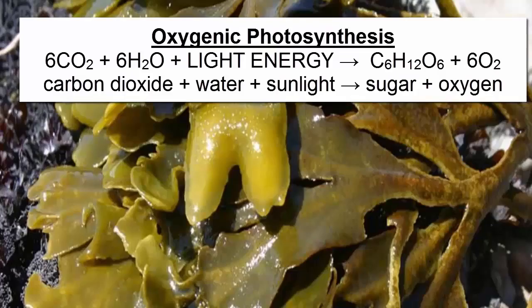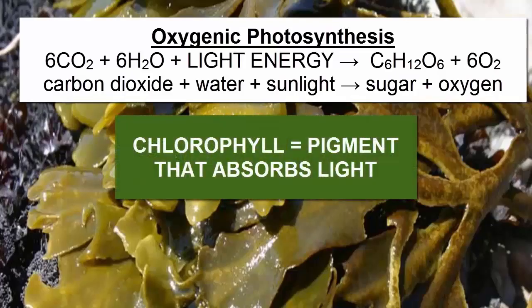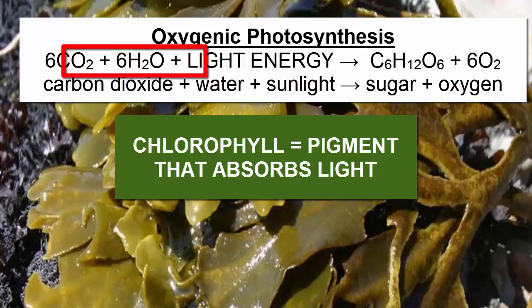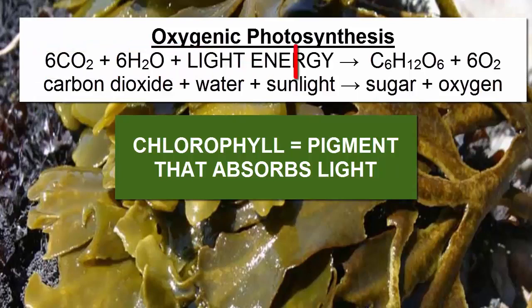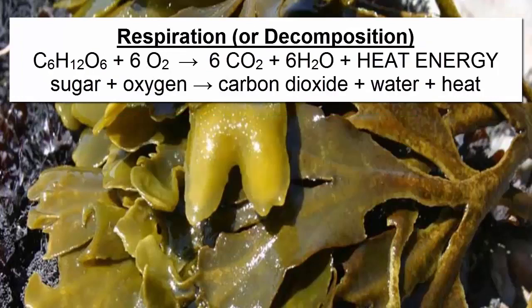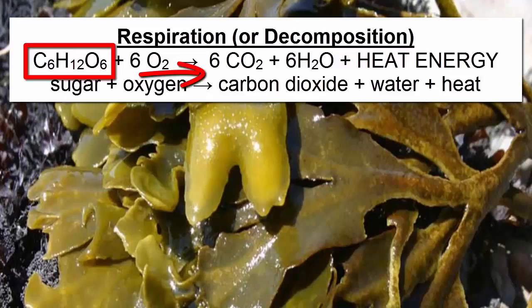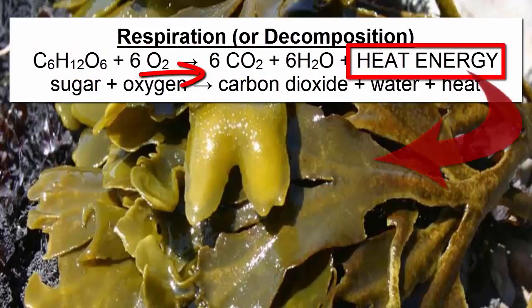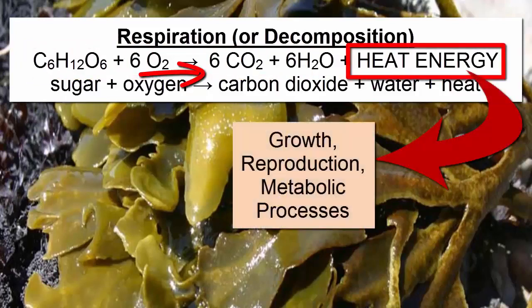Photosynthesis uses the pigment known as chlorophyll to capture light energy from the sun, which it then uses to combine abundant surrounding molecules like carbon dioxide and water to synthesize sugar molecules. Respiration is the opposite process, happening when organisms break down sugar to release its stored energy and use it for growth, reproduction, and energy-intensive metabolic processes.